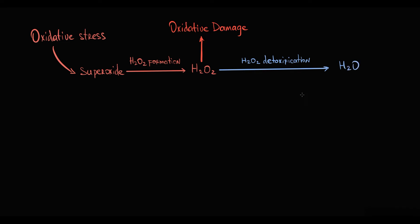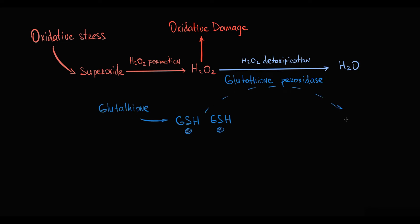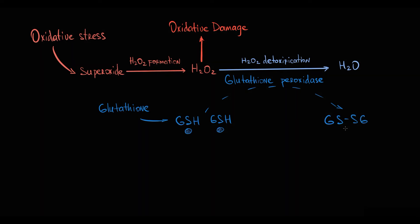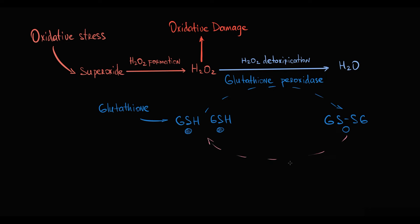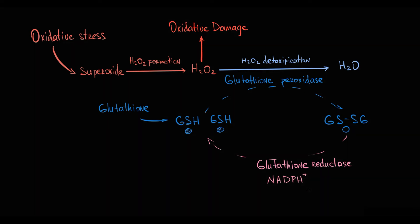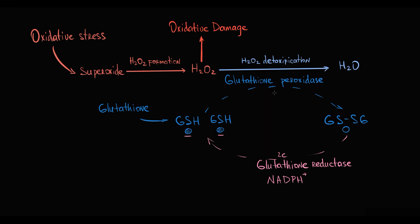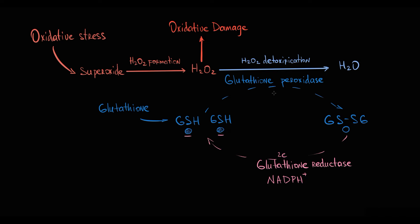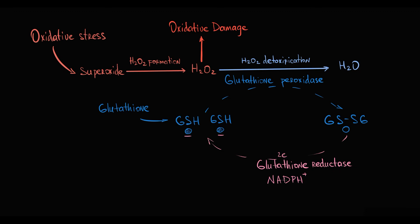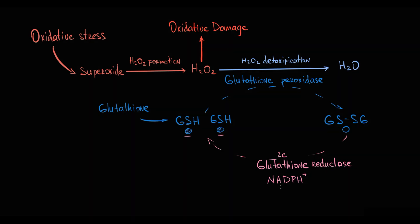Detoxification of hydrogen peroxide is provided by glutathione peroxidase, which reduces hydrogen peroxide to water. In this process, two molecules of glutathione donate two hydrogens, resulting in formation of glutathione disulfide — an inactive form of glutathione. To become functionally active again, glutathione disulfide must be reduced back to two glutathione molecules. This conversion is provided by glutathione reductase, which uses NADPH as a coenzyme. NADPH molecules donate two electrons to glutathione disulfide, converting it to two glutathione molecules, which can then be used again for detoxification of hydrogen peroxide. Thus, recycling of glutathione is provided by NADPH molecules.